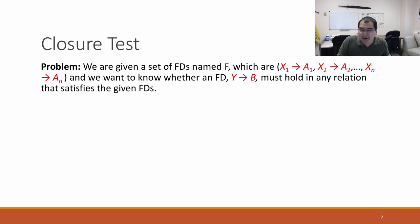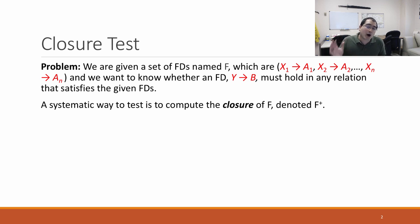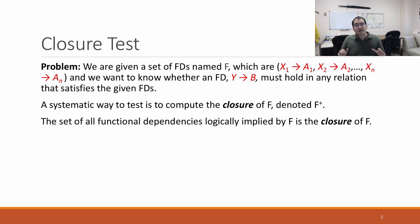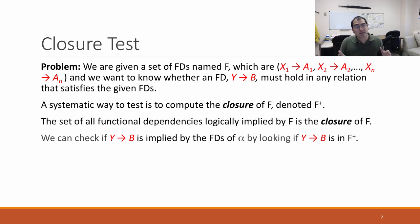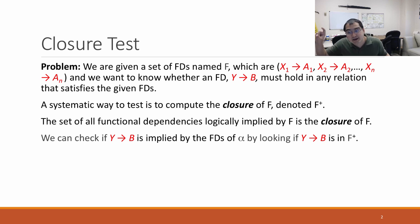Why we might want to do this, we'll talk about in a little bit. A way of testing this, a way of proving that y functionally determines b given all these other functional dependencies, is to compute the closure of F, denoted by F+. The little plus means closure. All of the functional dependencies that are logically implied by F is called the closure of F — every possible functional dependency that must hold given F.